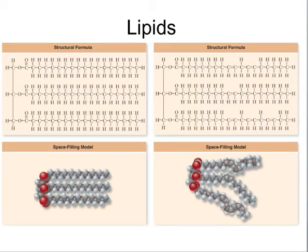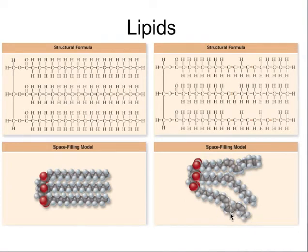This is important because it changes the structure of the lipid. When the lipid is completely saturated, the chains are pretty linear, as you can see. They're very stiff, and this helps the molecules stack upon each other, making them less flexible or less fluid. On the other hand, when you have double bonds, these double bonds add kinks to the fatty acid chain, resulting in more fluid and less compact molecules.